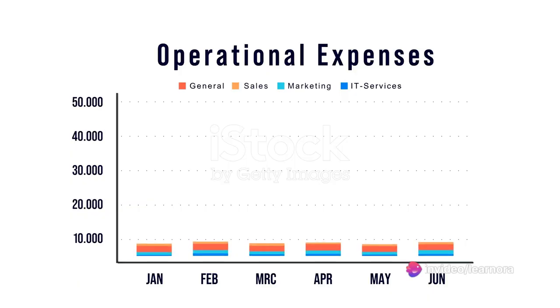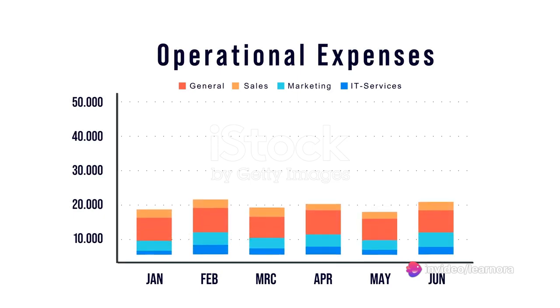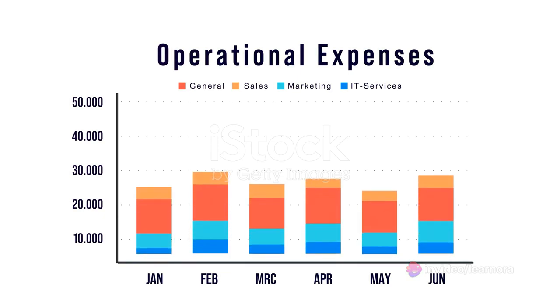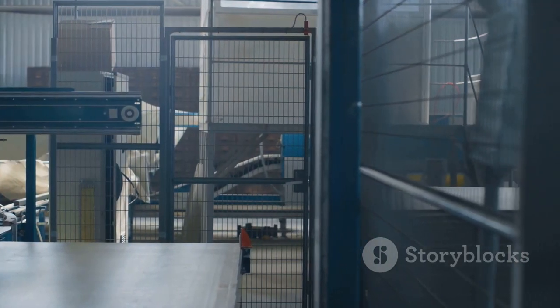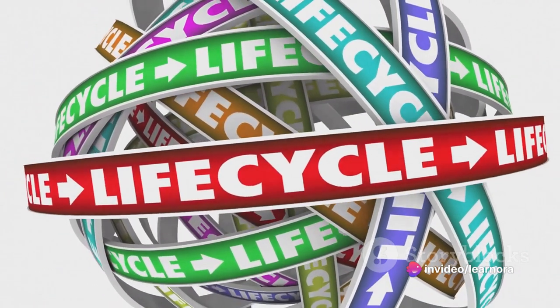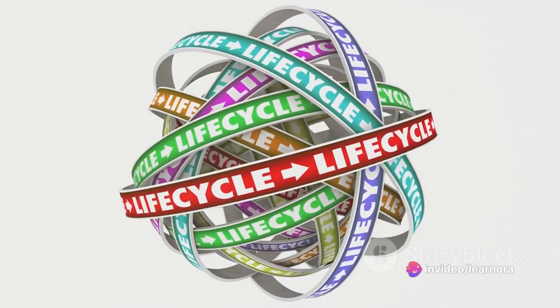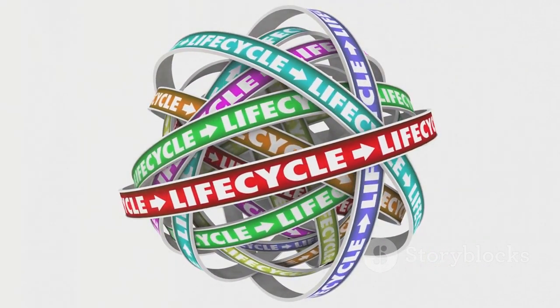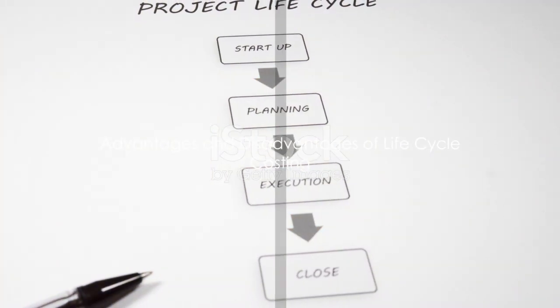Upstream costs are those incurred as a company prepares to start its production process, like raw materials and research and development. Production costs come after the purchase, including operating and maintenance expenses. Downstream costs are those that a company incurs after it has completed its production process, like distribution expenses and marketing plans.